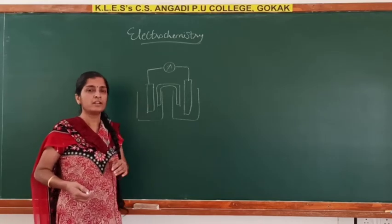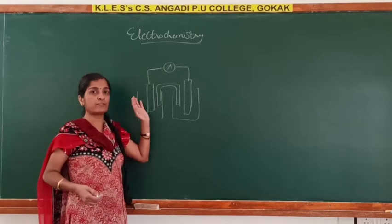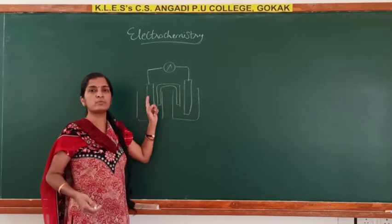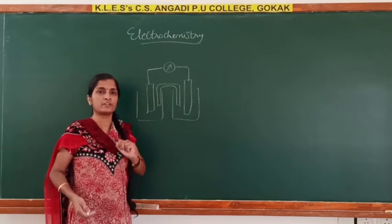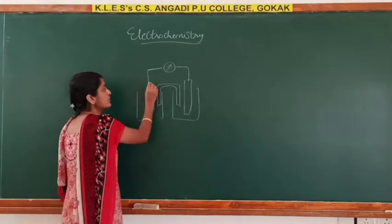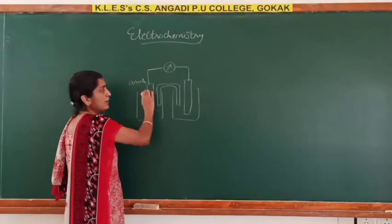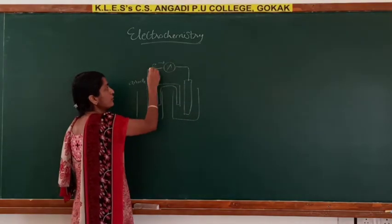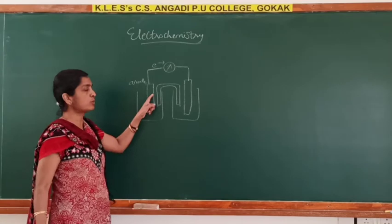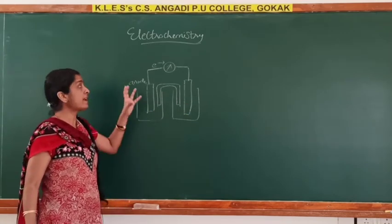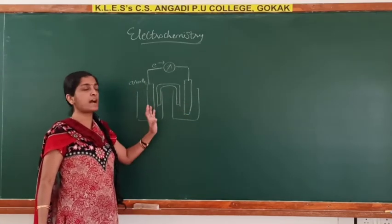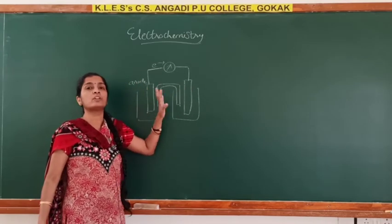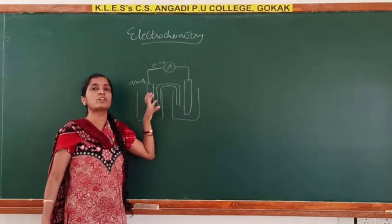The electrical work done here involves moving the charges from one electrode to the other electrode. There is a potential difference between the two electrodes. Electrons have to move from anode to cathode through some potential difference. So there will be some work done when these charges are moved through a potential difference. That is the electrical work done in the case of an electrochemical cell.